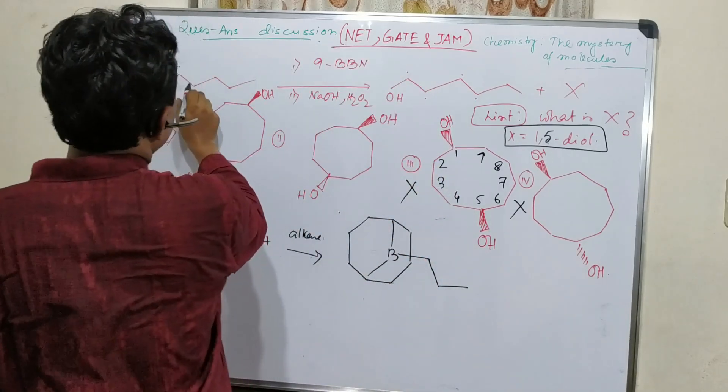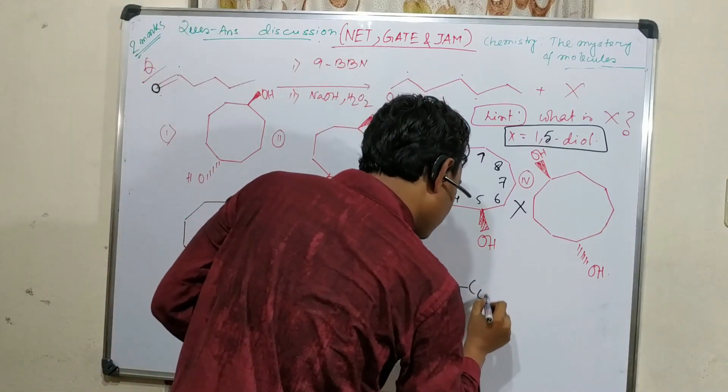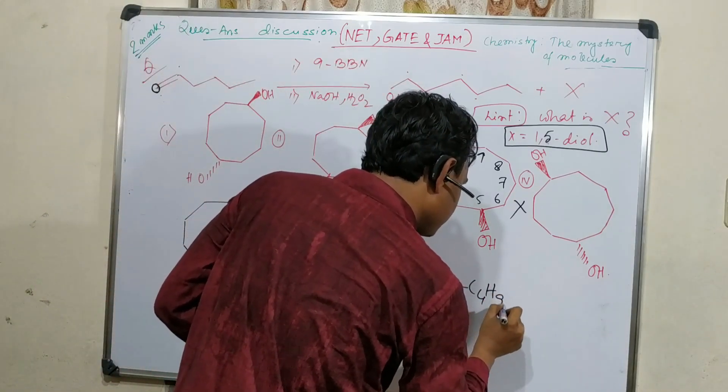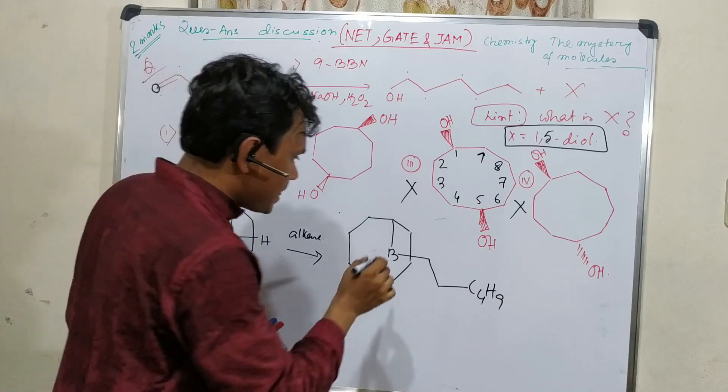What will be the product after this attachment? So this double bond is gone. So right now we have 4, 8, 9 carbons. Got it?